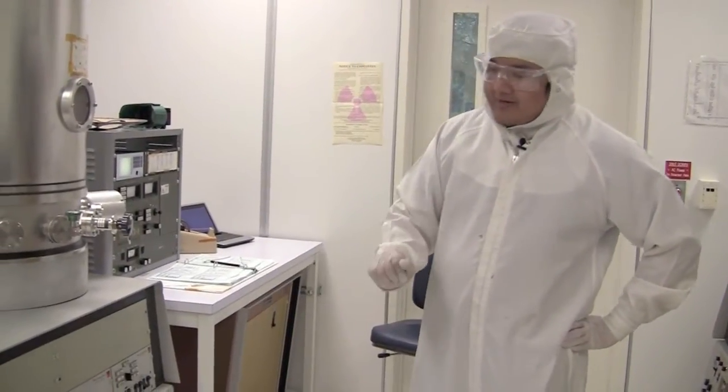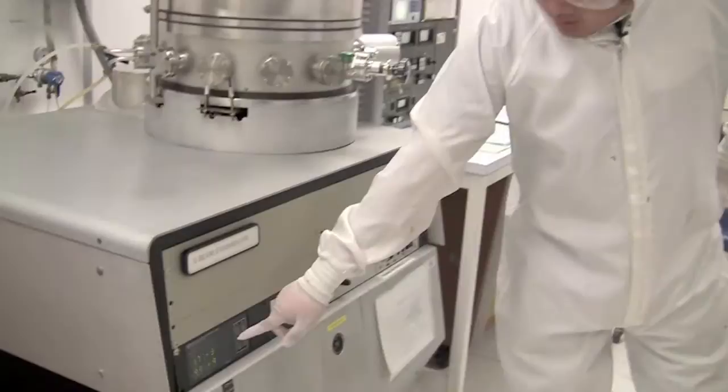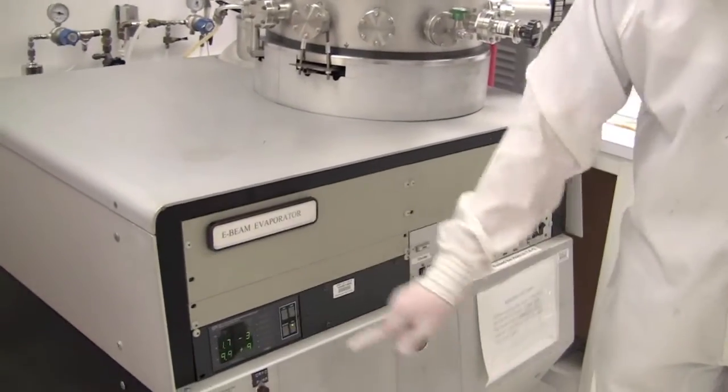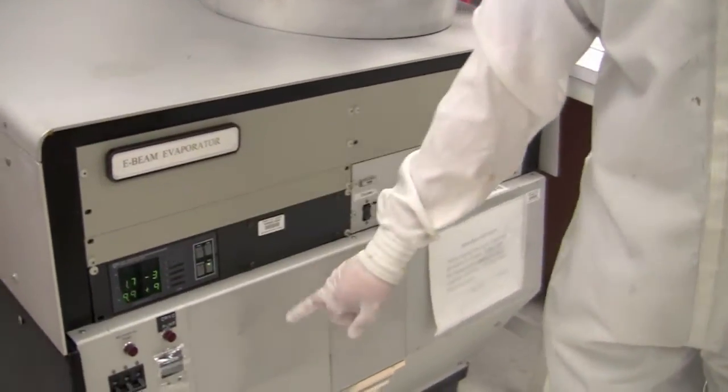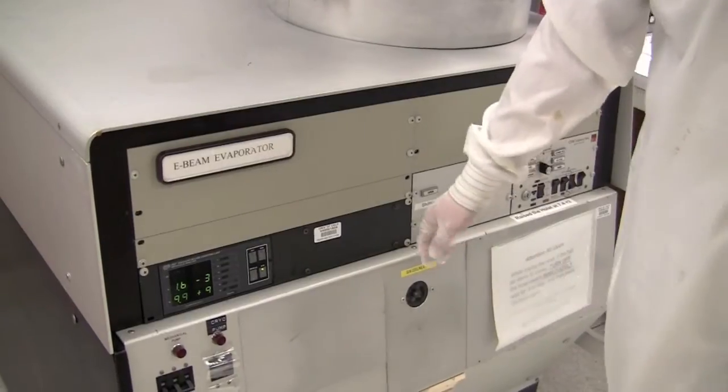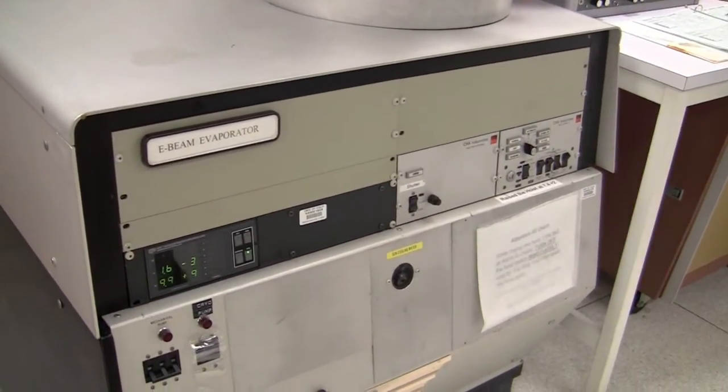So we're going to wait till the high vac goes in the negative 4 range and when it goes in the negative 4 range we're going to turn the ion gauge on. So we'll just wait for the high vac to pump down.